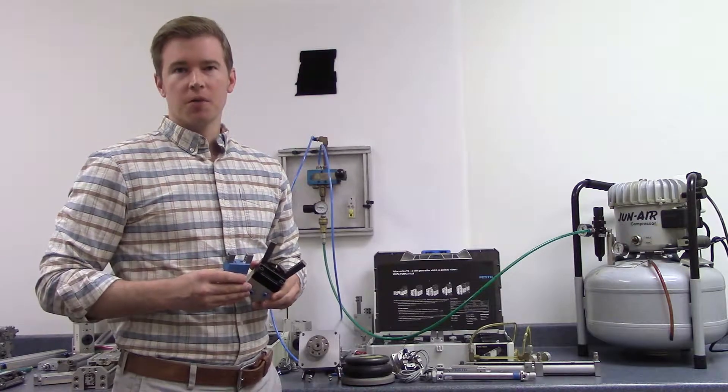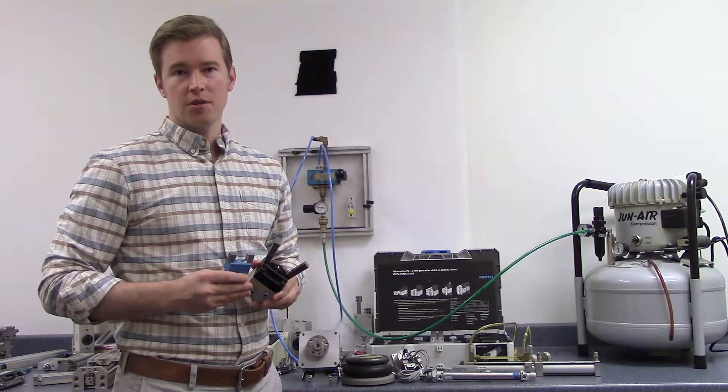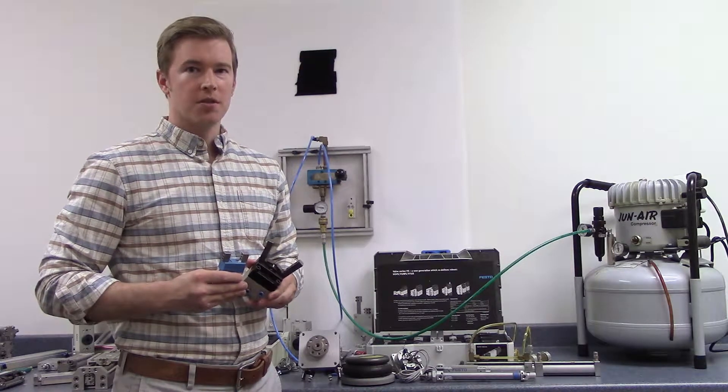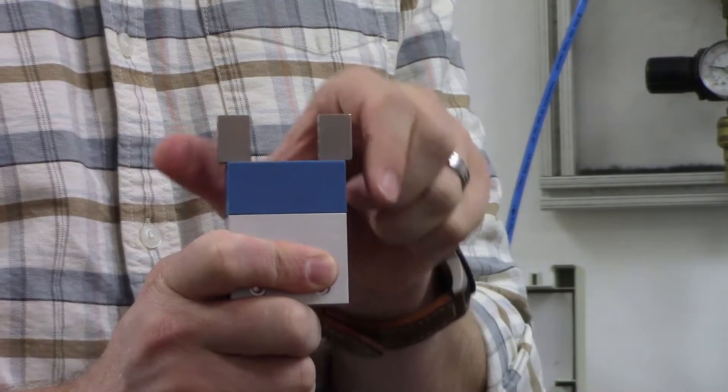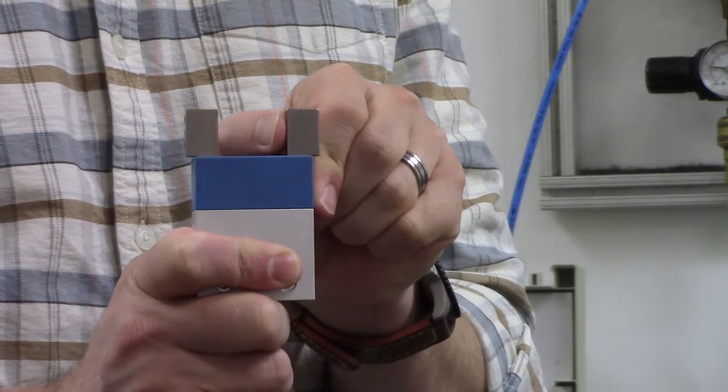Parallel grippers are fairly self-explanatory. Their fingers move along a parallel linear path to pinch and grab workpieces. Among the two popular gripper types, the parallel design is the most common, since its simple motion can make it useful for a large range of industrial applications.